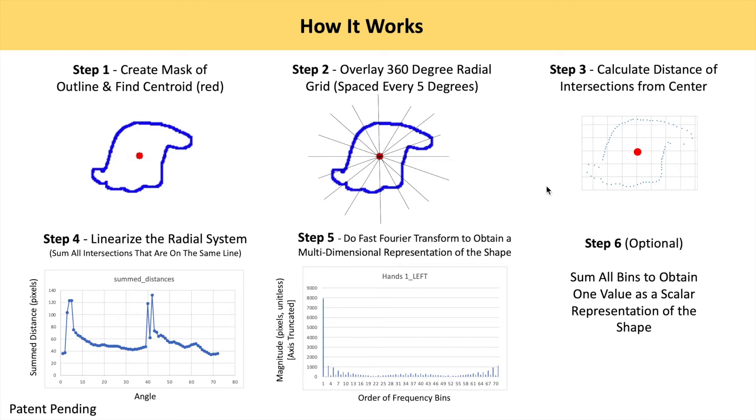Lastly, in step 6, we can derive a single value representing the shape in step 1 by summing all the magnitudes in the frequency plot.